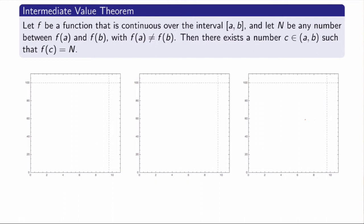Let's see what that means in Usain Bolt's case. If I draw the position function of Usain Bolt — he started at 0, accelerated, probably reached some peak maximal velocity, and reached 100m at 9.58 seconds — that would be his position function. The theorem says: f of 0 is 0, f of 9.58 is 100. If you pick any capital N in between, for example 60, then there must be a c — a time between 0 and 9.58 seconds — such that the value of the function was exactly equal to 60. And indeed there is; it's going to be somewhere around 7 seconds.